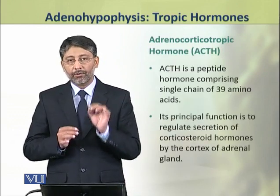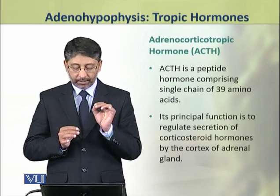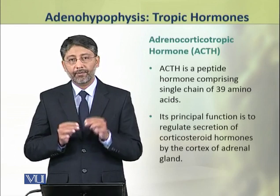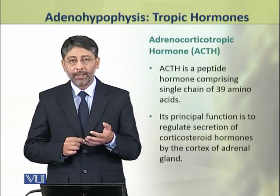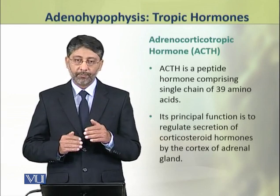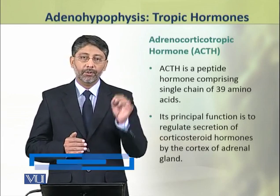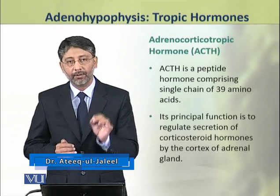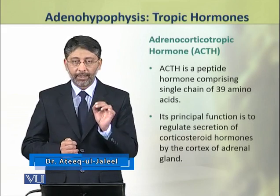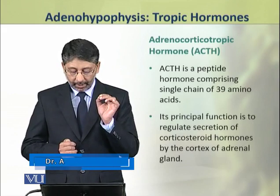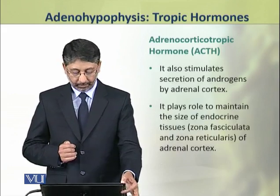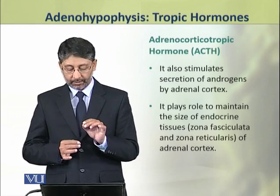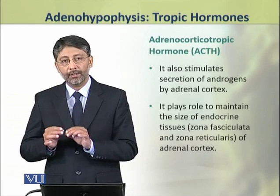The adrenocorticotropic hormone, or ACTH, is a peptide hormone that comprises a single chain of 39 amino acids. Its principal function is to regulate the secretion of corticosteroid hormones by the cortex of the adrenal gland. It also stimulates the secretion of androgens by the adrenal cortex.